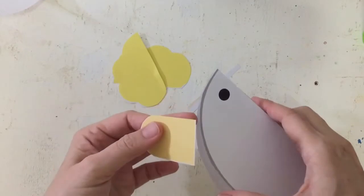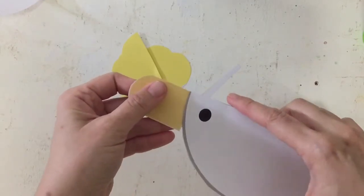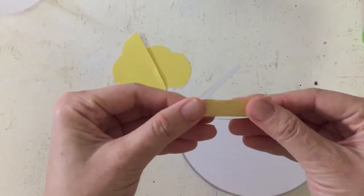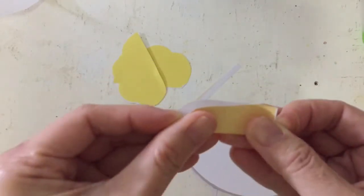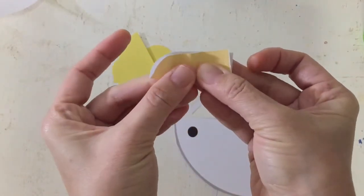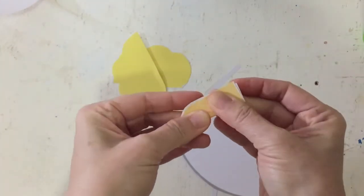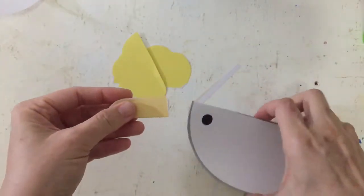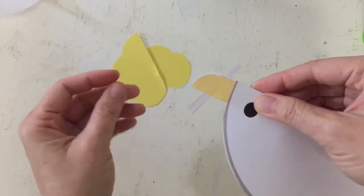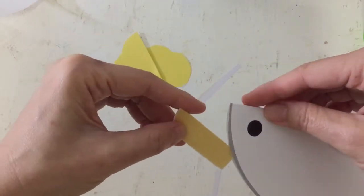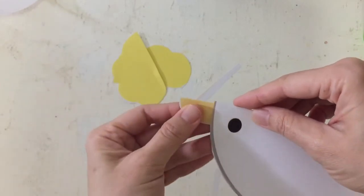And then we put the bill. We fold it in half first. And then we glue it inside the fold. Oops, upside down. Like that.